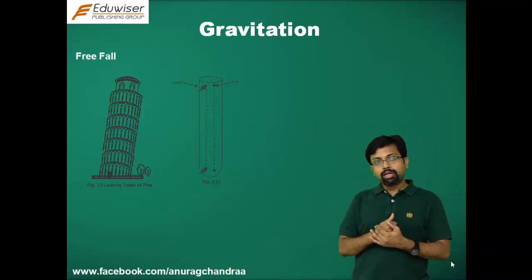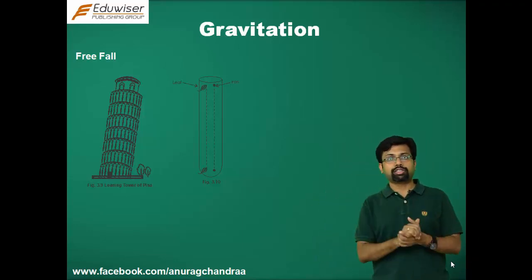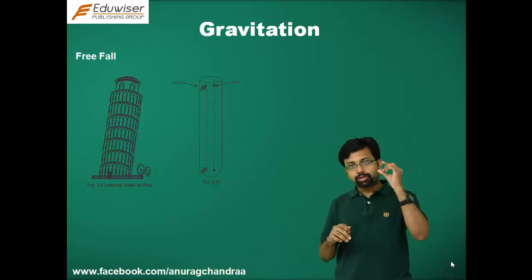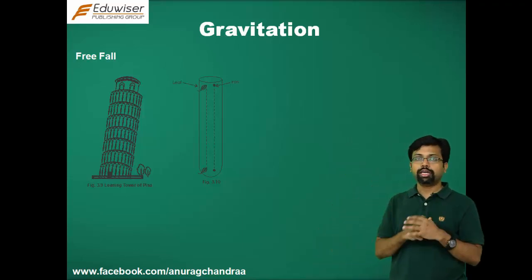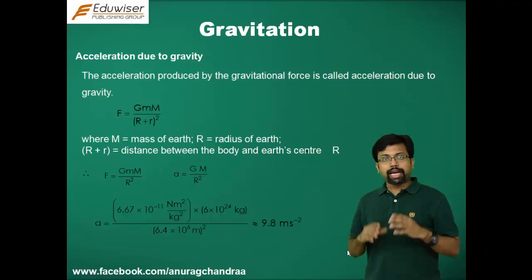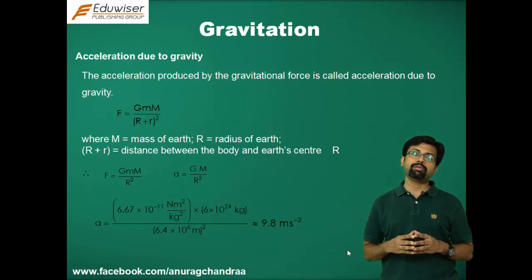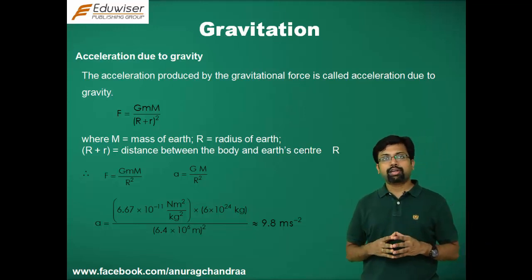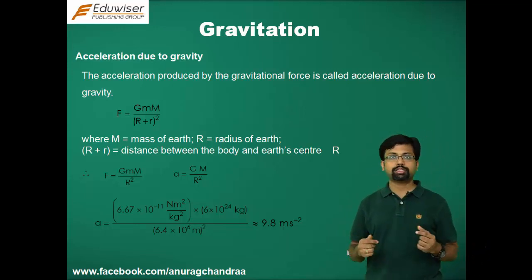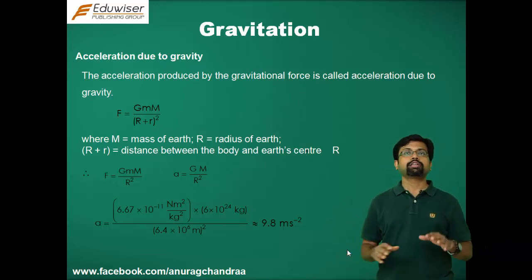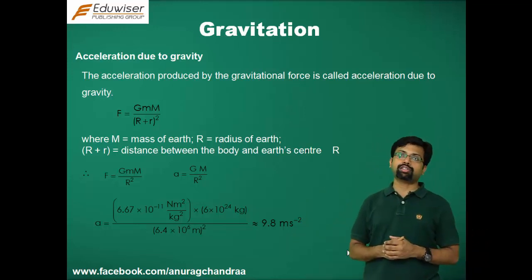This led to the idea of finding out what this constant acceleration was. It was given a specific name: the acceleration due to gravity. Any freely falling body experiences this acceleration. For any two objects freely falling near the surface of the earth, irrespective of their masses, the acceleration they experience is the same and is equal to the acceleration due to gravity.